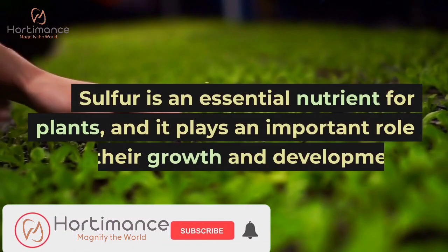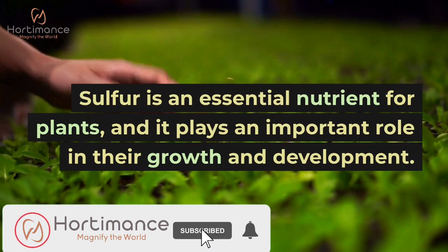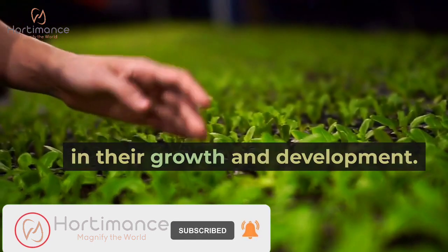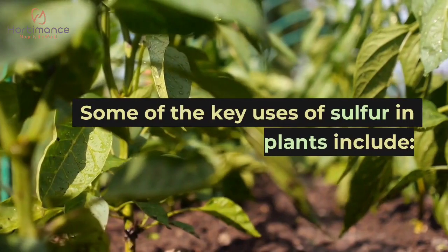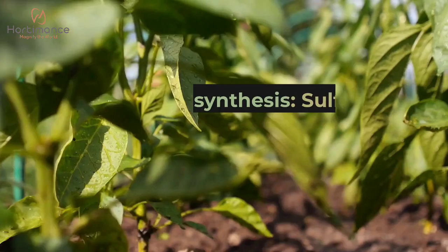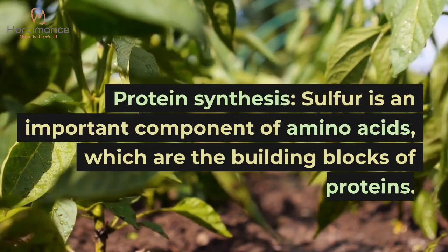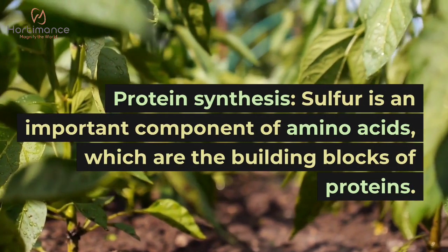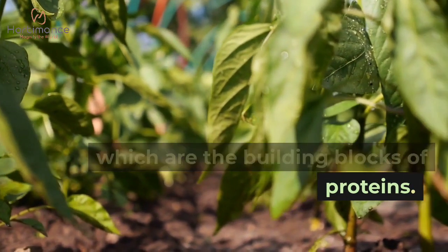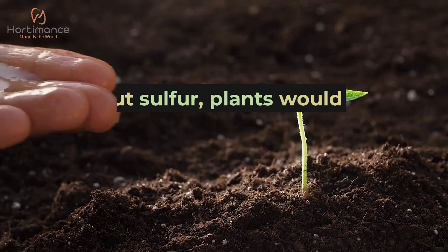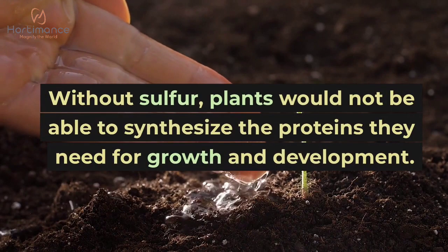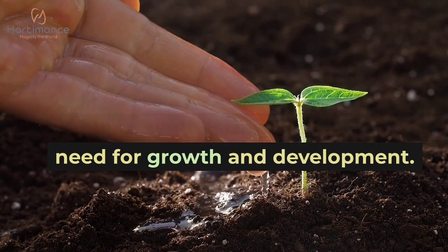Sulfur is an essential nutrient for plants and it plays an important role in their growth and development. One of the key uses of sulfur in plants includes protein synthesis. Sulfur is an important component of amino acids, which are the building blocks of proteins. Without sulfur, plants would not be able to synthesize the proteins they need for growth and development.